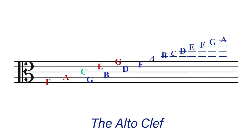Coming down now, we know that the first line of the alto clef is F. So the space below the clef will be E, the first ledger line below the staff will be D, the space below the first ledger line will be C, the second ledger line is B, the space below the second ledger line is A, the third ledger line is G, the space below the third ledger line is F, and the fourth ledger line is E.